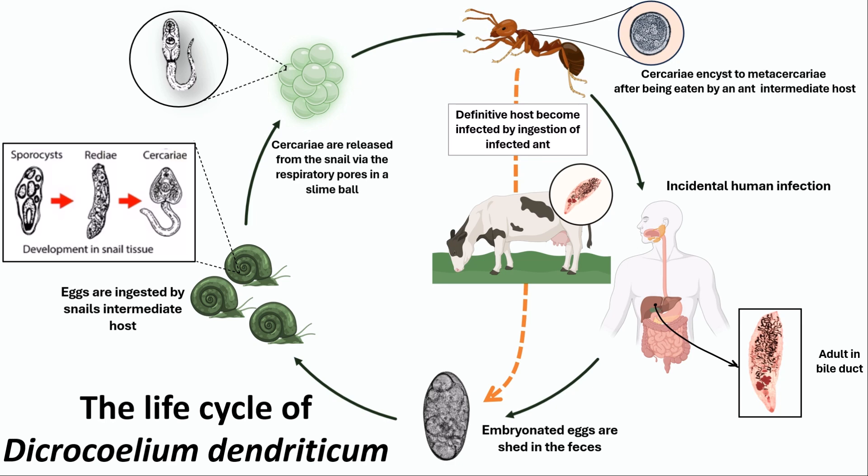Humans can serve as definitive hosts after ingesting infected ants, for example in contaminated food items. The life cycle of Dicrocoelium dendriticum, from when the main host eats the ants infected with metacercariae until adult worms form in the bile ducts, takes about 6 to 7 weeks. After this period, the worms begin to mate, either hermaphroditically or through cross mating, and start producing and excreting eggs.